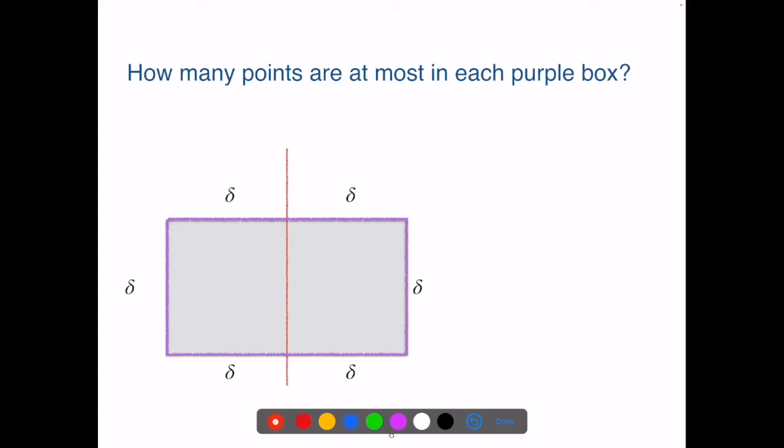Recall, delta is the minimum distance of any pairs of points that are on the same side of the dividing line. In another word, any pairs of points on the same side have a distance no less than delta.